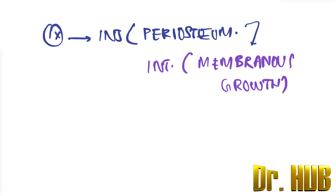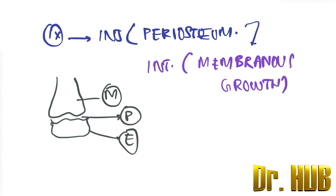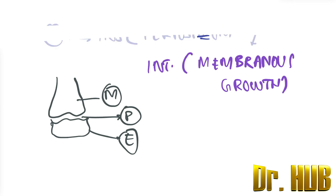Now let's look at some diagrams. This is the basic structure of the bone: the metaphysis, the physis, and the epiphysis. Let's focus on types 1 through 5, as they are the most important ones.